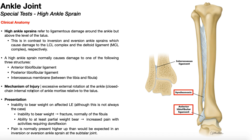The most common mechanism of injury for a high ankle sprain is excessive external rotation at the ankle — basically when the foot externally rotates relative to the tibia and fibula. More often than not, this injury occurs in the closed chain where the foot is planted, so it would actually be internal rotation of the ankle mortis relative to the talus. It almost always occurs in contact sports with a closed chain mechanism.